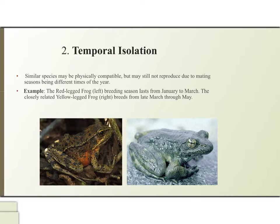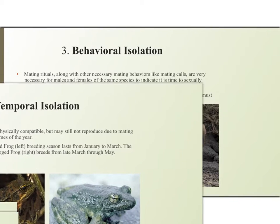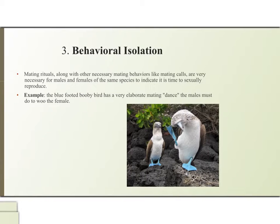The red-legged frog's breeding season lasts from January to March. The closely related yellow-legged frog, as you can see in the right picture, breeds from late March through May. The third type is behavioral isolation.